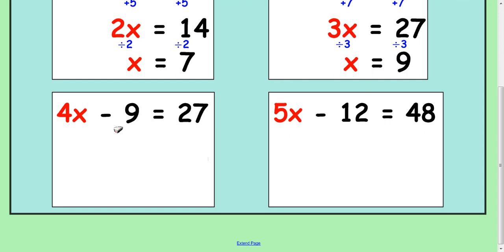Look at the take away 9, you do the opposite, which is add. But make sure you do it to the other side too. So that leaves us with 4x here. And 27, add 9, it's 36. And divide by 4 to get 1x, and you get 9.